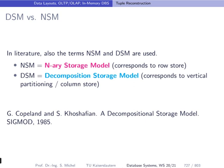In literature, there are two terms corresponding to row store and column store. NSM — the N-ary Storage Model — corresponds to the row store, and DSM — the Decompositional Storage Model, as mentioned in that 1985 paper title — corresponds to column stores, or more generally to the vertical partitioning approach where individual files do not have to contain single attributes.